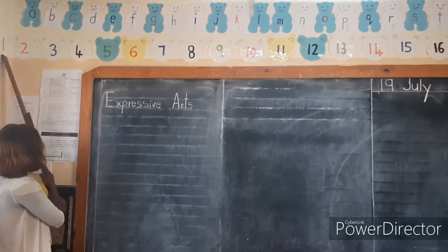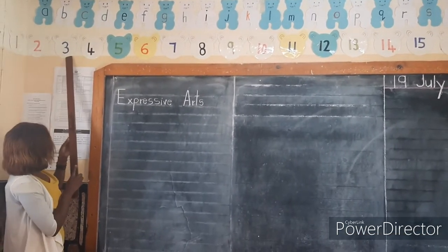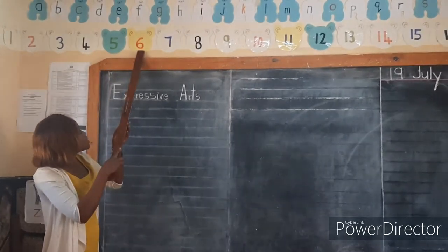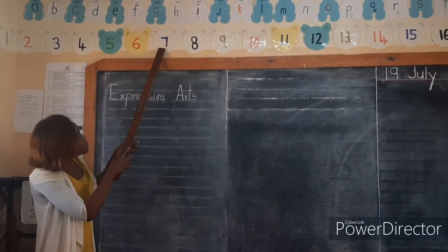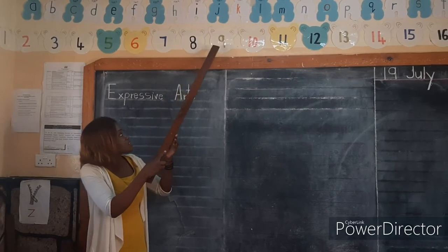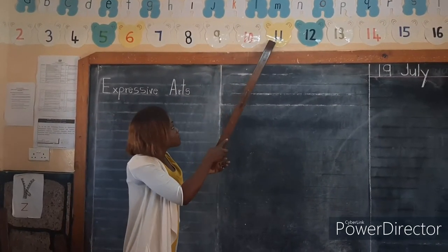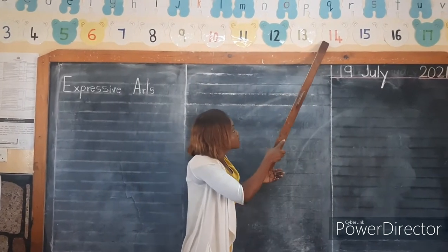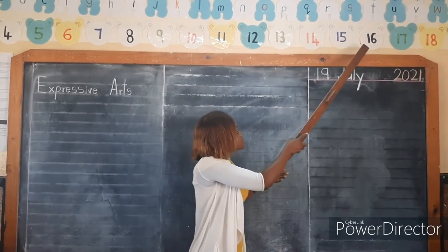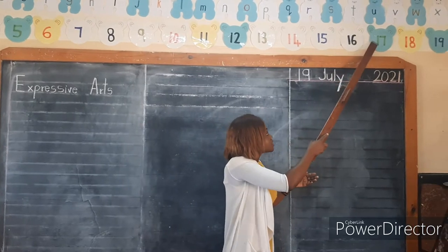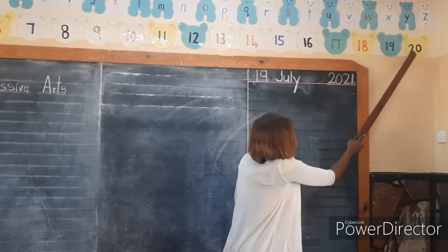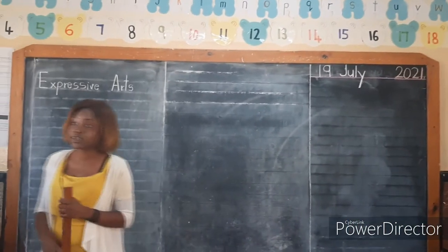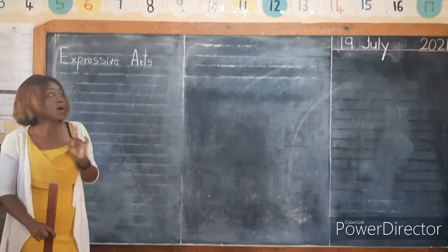So we count together: 1, 2, 3, 4, 5, 6, 7, 8, 9, 10, 11, 12, 13, 14, 15, 16, 17, 18, 19, 20. We have counted from 1 to 20.